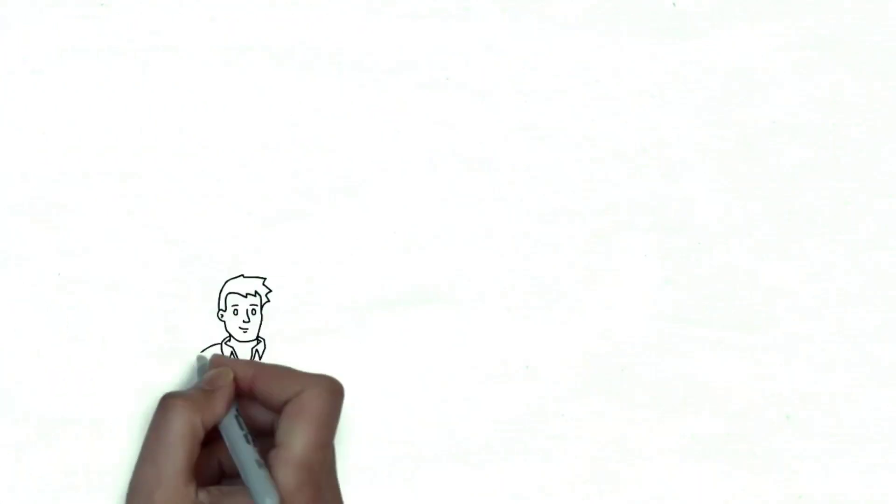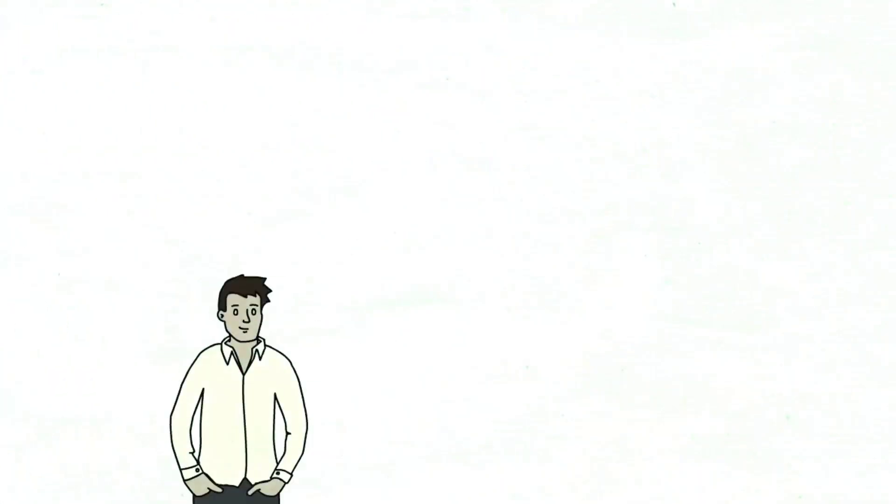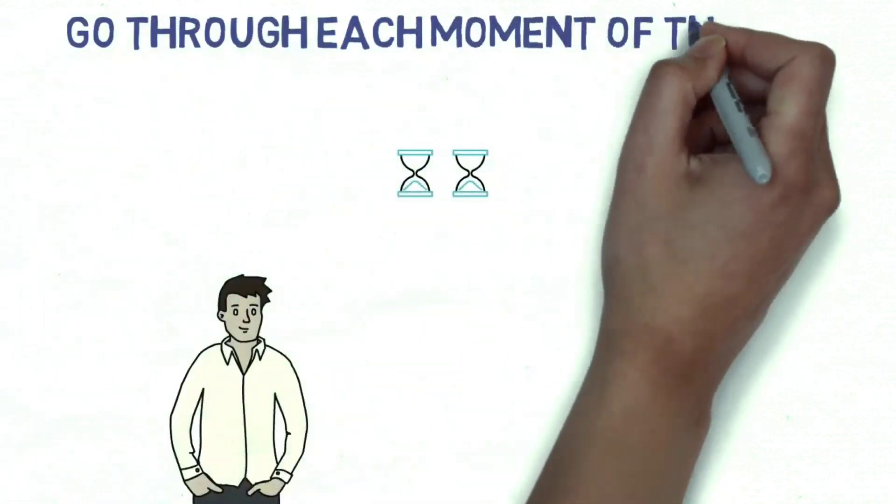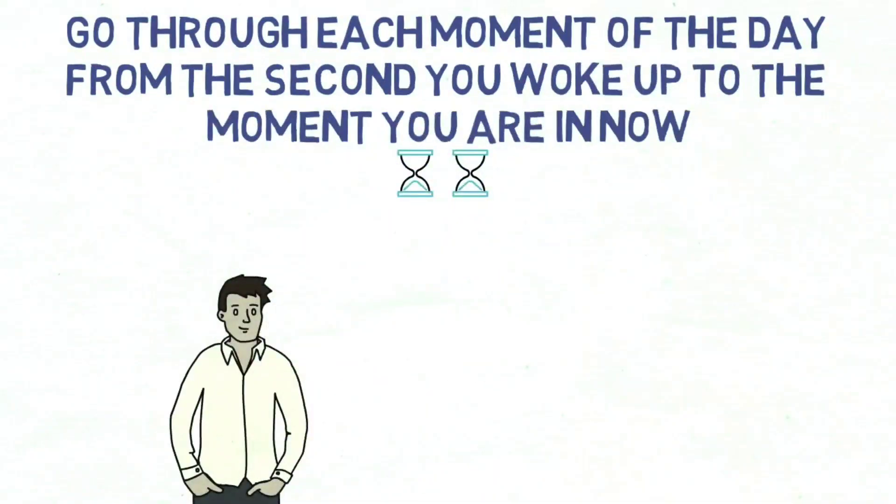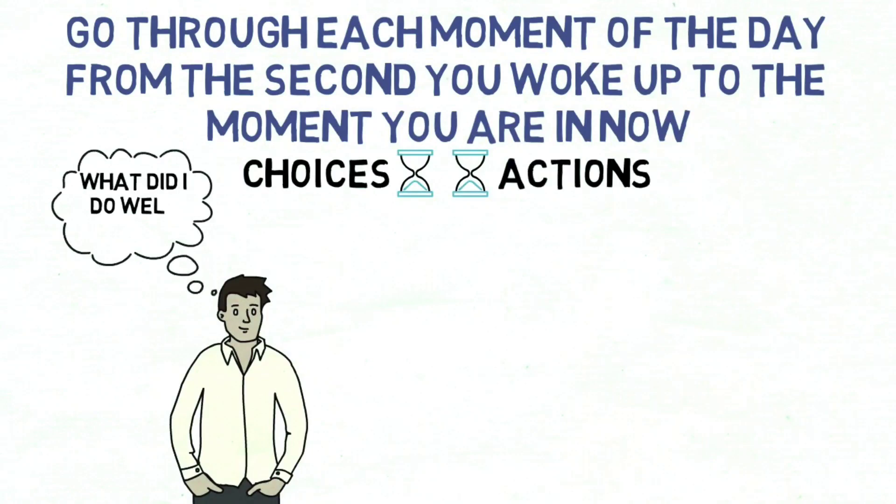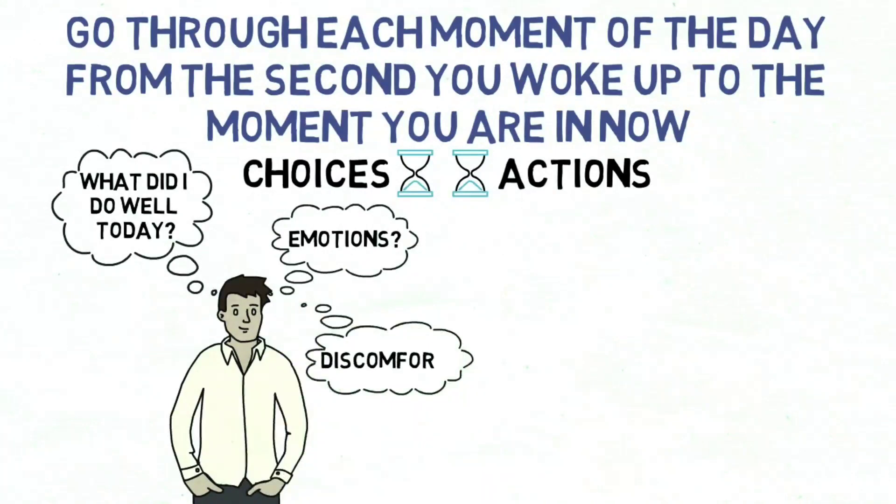You can incorporate this type of daily review into your evening routine by setting aside some time before getting into bed to recall the day you just had. Go through each moment of the day from the second you woke up to the moment you are in now. Meditate on the various choices and actions you made. What did you do well today? What emotions did you experience? What parts of your day brought you discomfort? How can you learn from what happened to you today? And what did you not get done today that you wish you had?